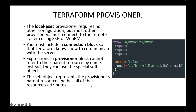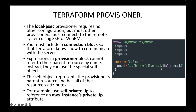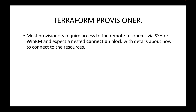The self object represents the provisioner's parent resource and has all of that resource's attributes. If the reference was outside this resource block, you would have to use aws_instance.web_instance.private_ip. But because it is within the same resource, you can use the self object — for example, self.private_ip — to reference an aws_instance private IP attribute.